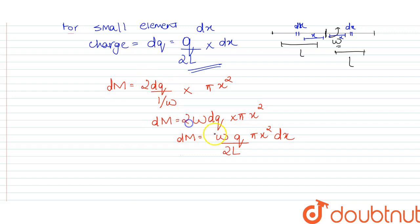The 2s cancel. So when we take magnetic moment, M will be the integration of dM, which will be equal to integration of omega Q π x squared dx upon L from 0 to L.